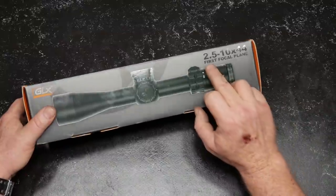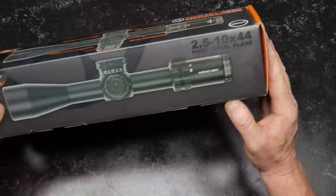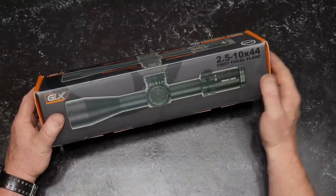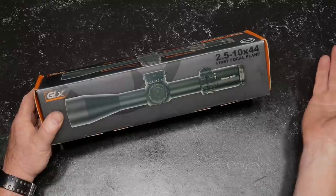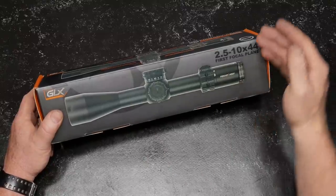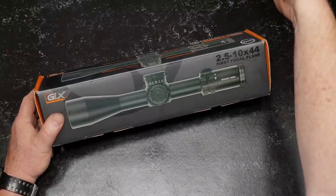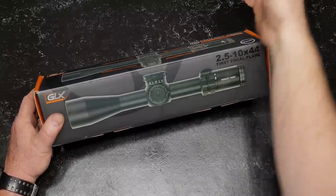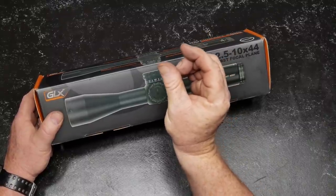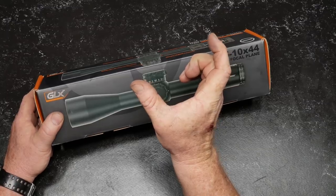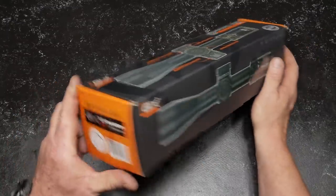This is the 2.5 to 10 by 44. First focal plane. Now, first focal plane, what does that mean for you guys that are not familiar? It doesn't matter what zoom level you have it in. The reticle will always stay in relationship to the target. So if you're on 2.5 power, the reticle is going to be itty bitty. And then if you zoom it up to 10 power, it's going to be big.